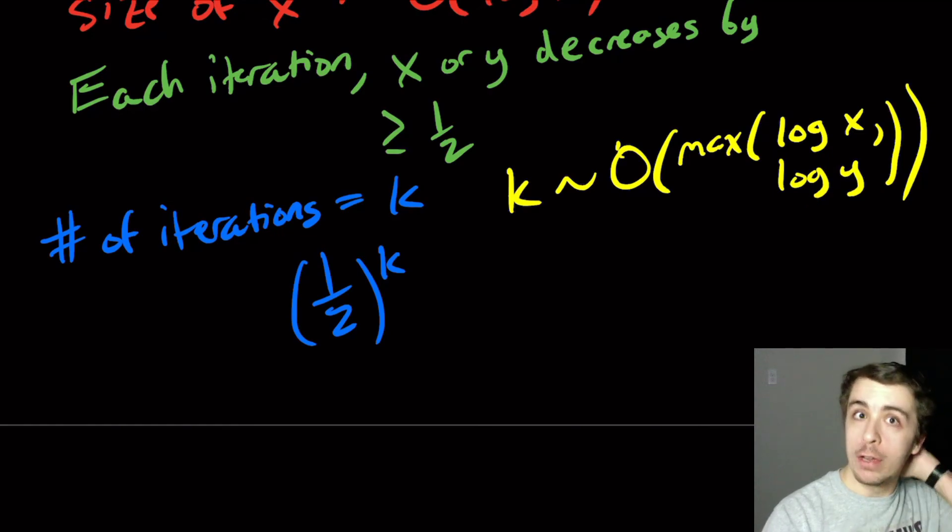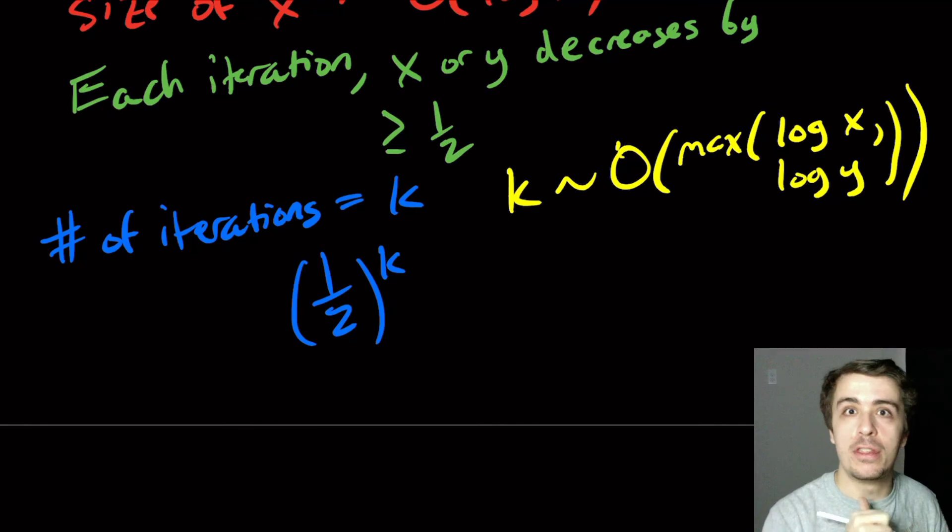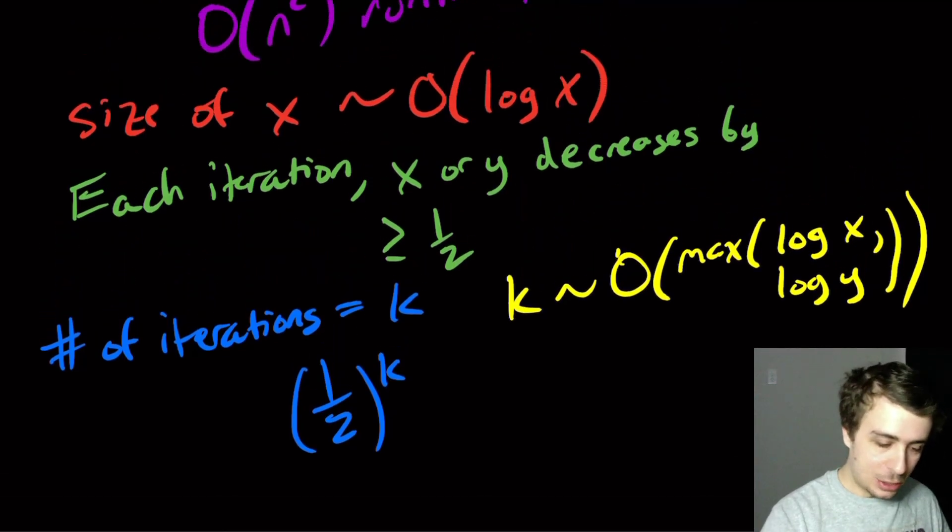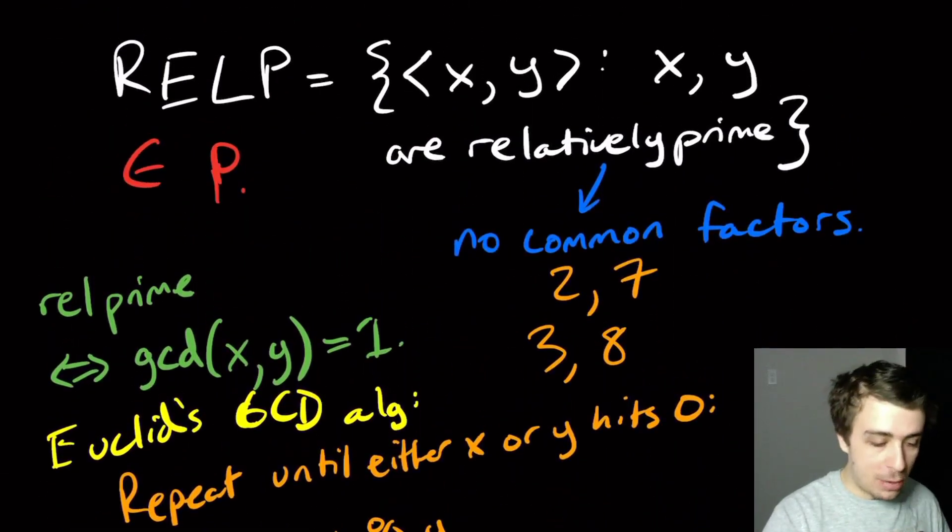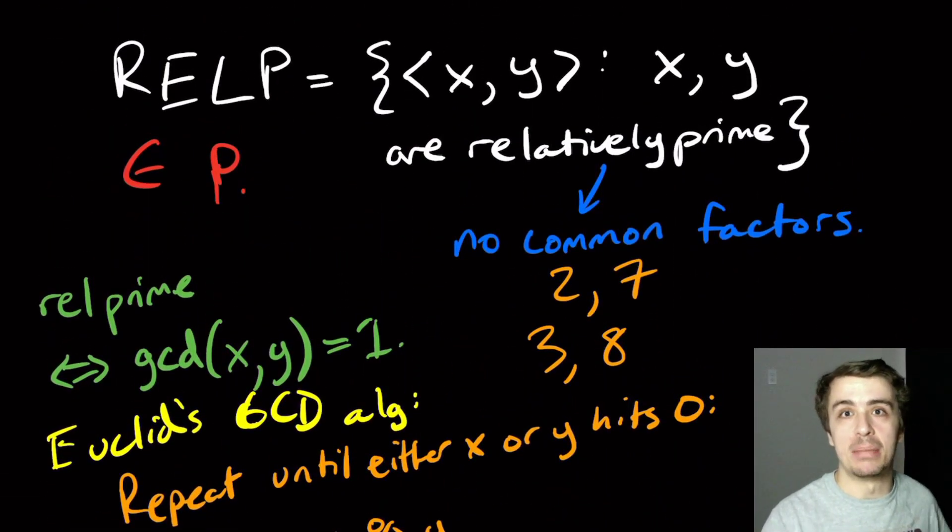So we have that the number of iterations is going to be logarithmic in one of the two numbers. And so for that reason, it's essentially linear in the size of the two numbers here. And so therefore, this runtime certainly is a polynomial. It's linear, in fact, which is great. And so therefore, we can show, with that reasoning, that RELP is a member of P.